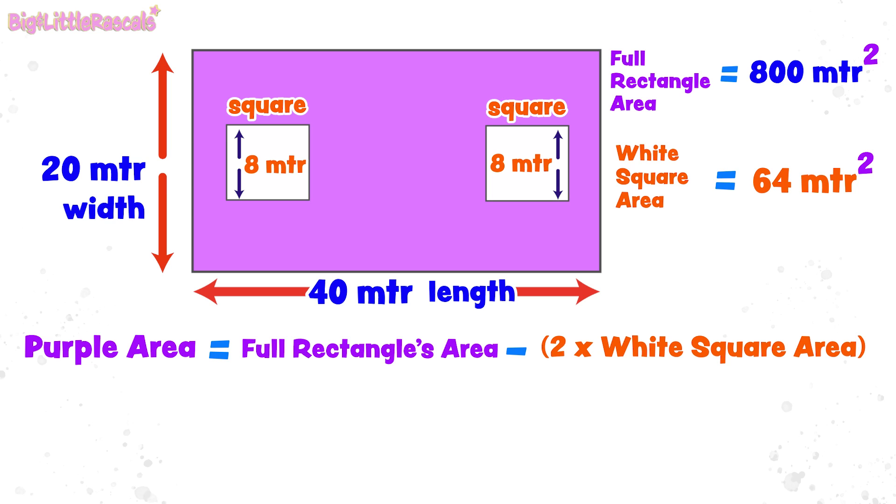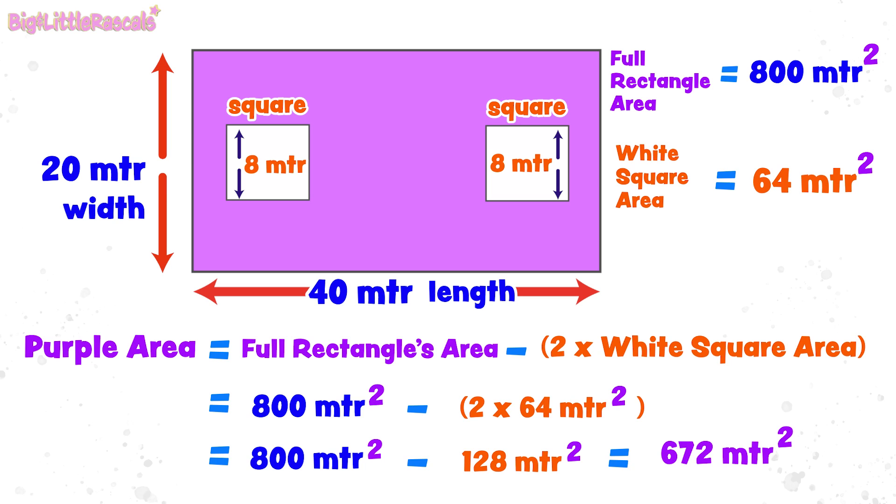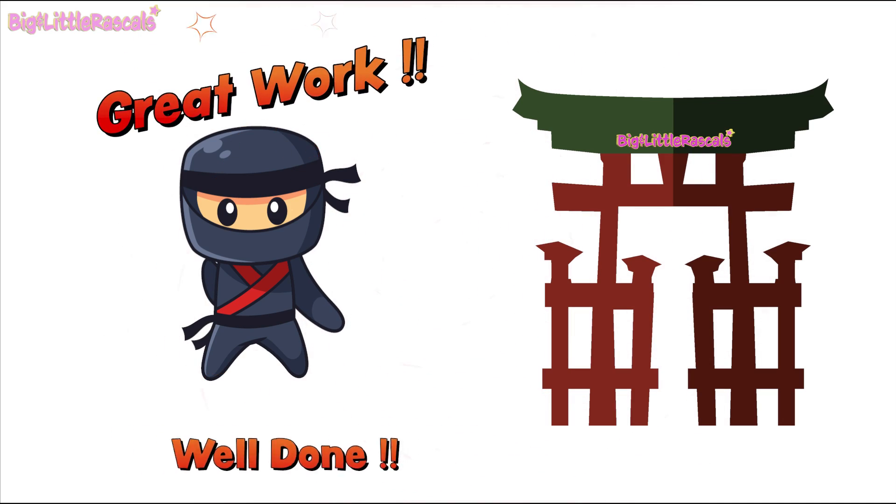Full rectangle areas minus 2 times white square areas. So, the purple colored area is equals to 800 square meters minus 2 times 64 square meters. So, the purple colored area equals to 672 square meters. Hurray! We solved the challenge! Well done! Great work everyone!